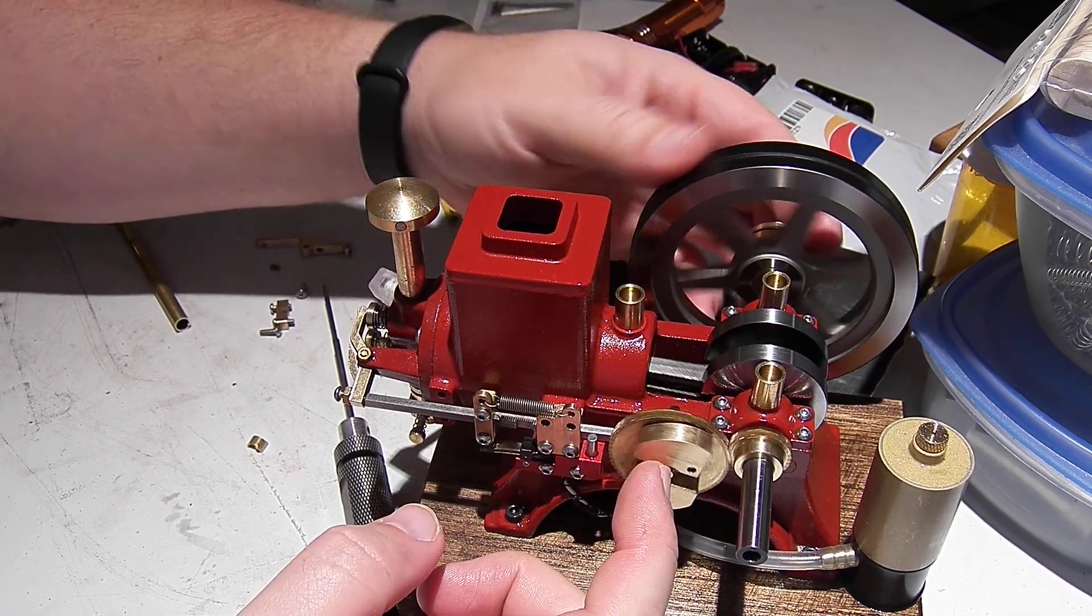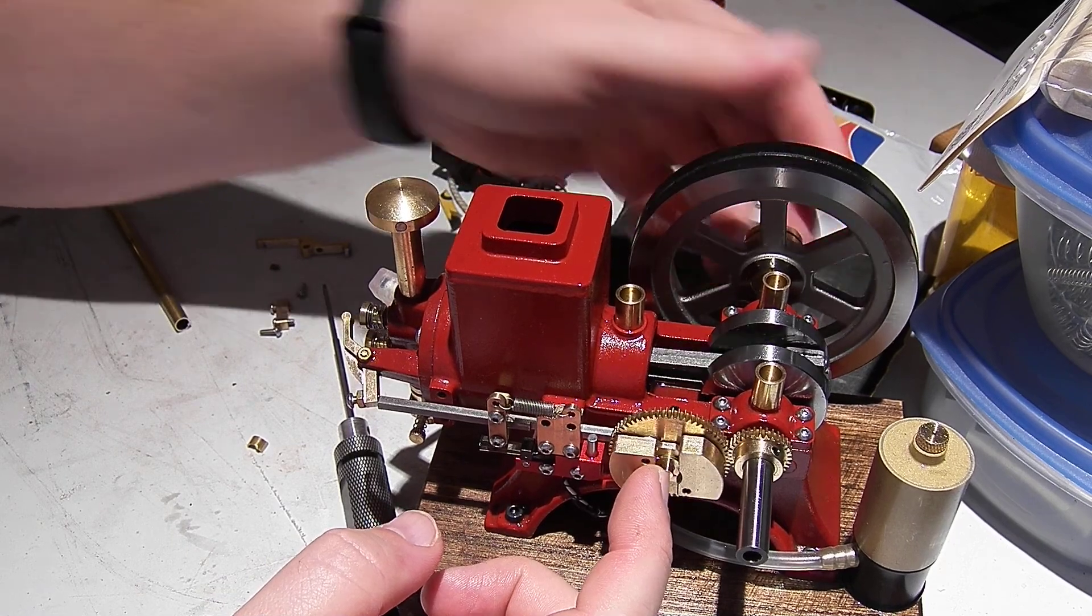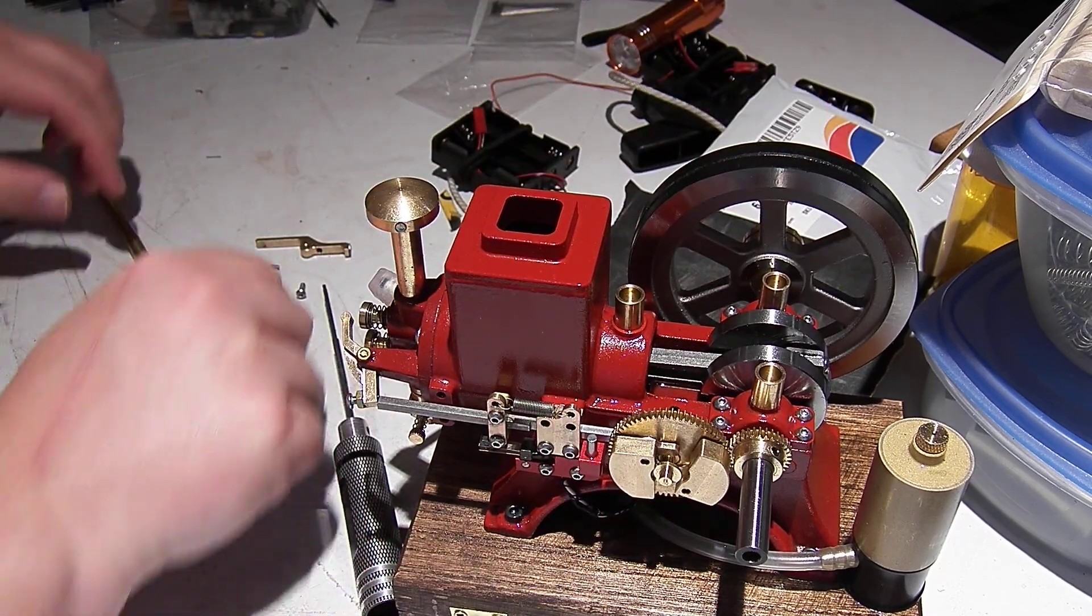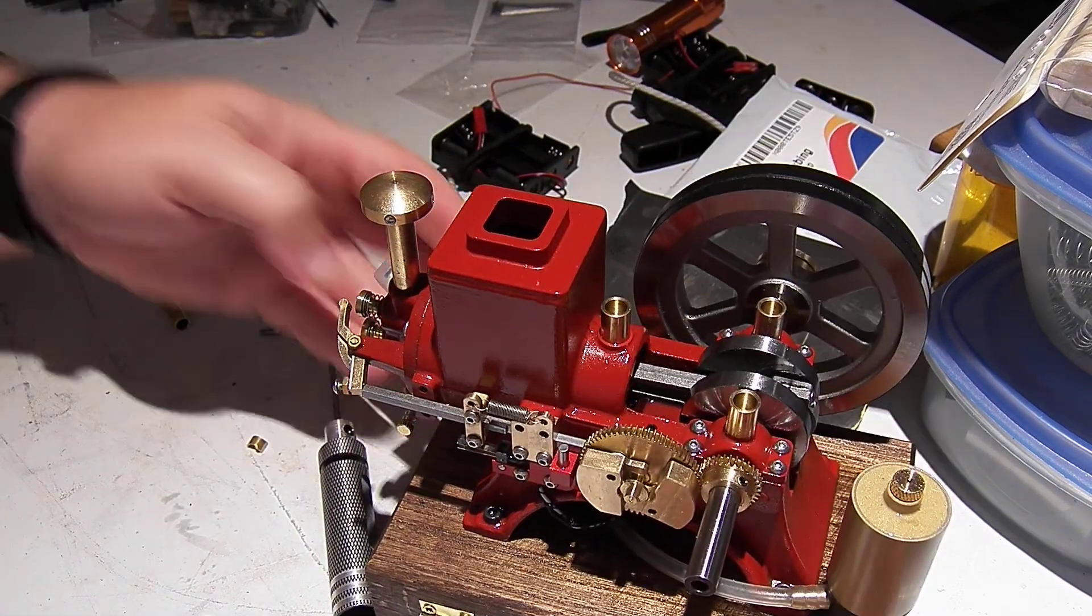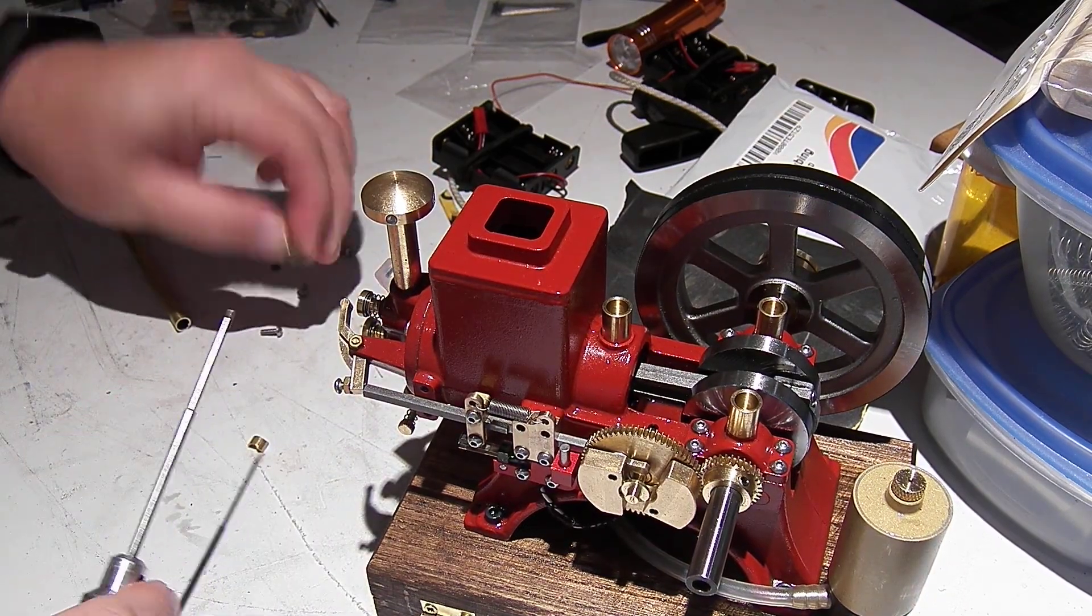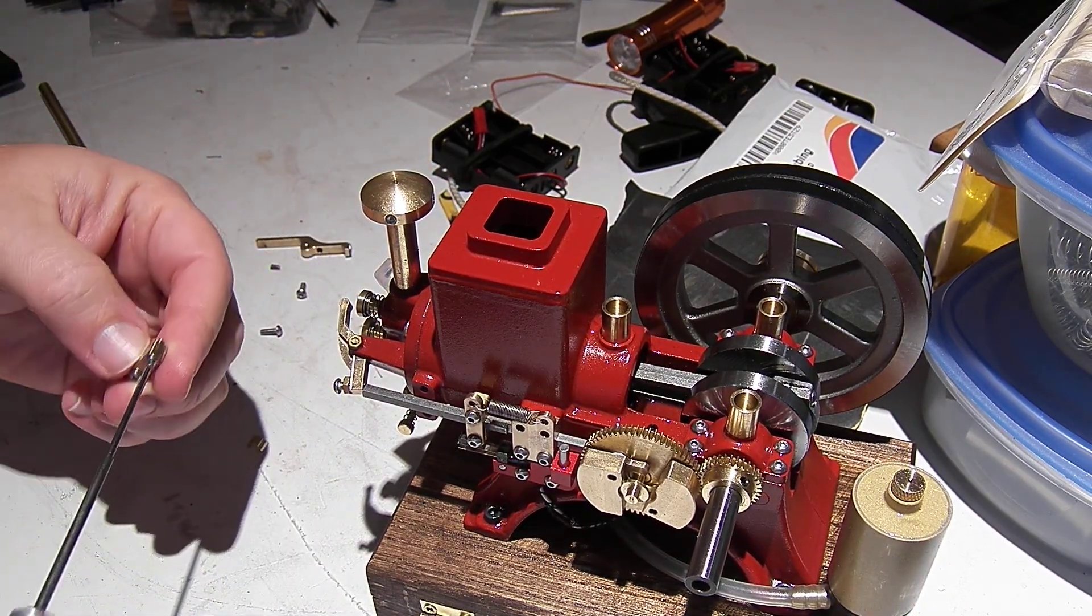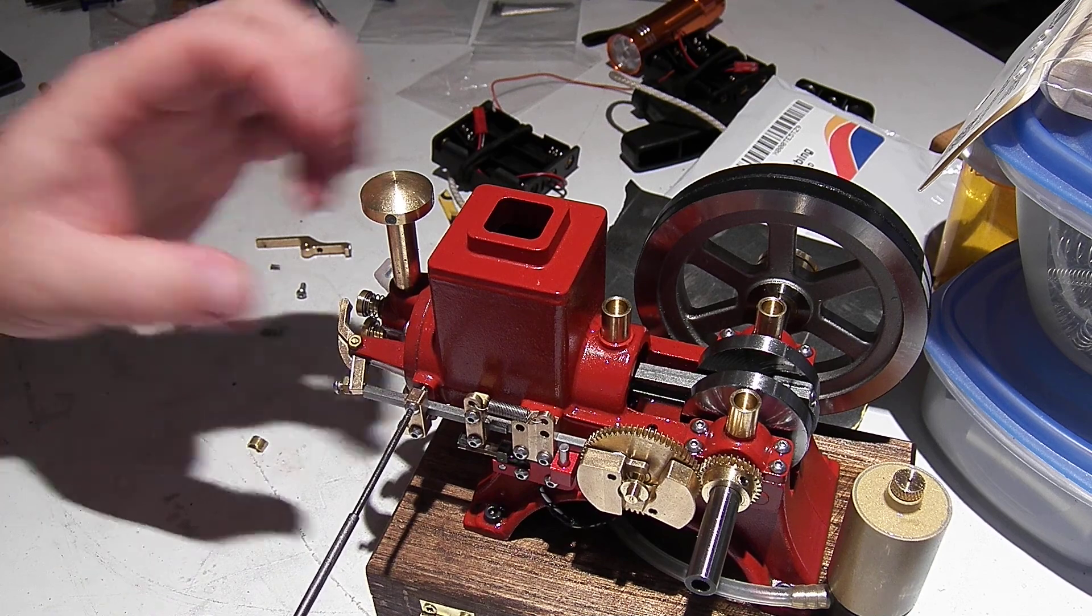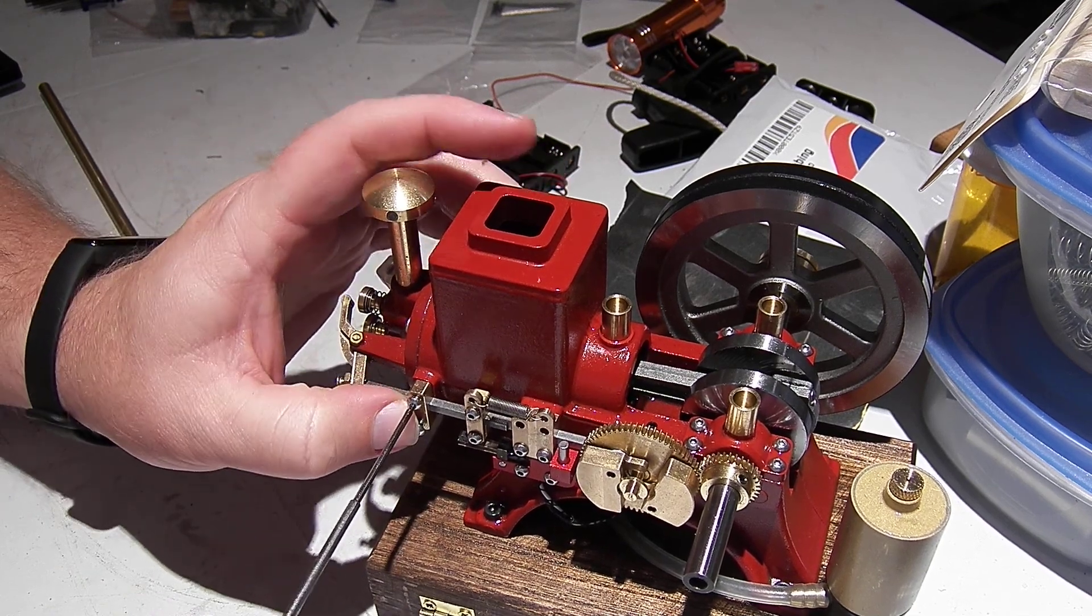Now with that brass shoe in there, it should stop from wearing on the cam as quickly because it's brass on brass instead of steel on brass.